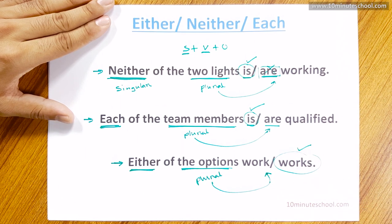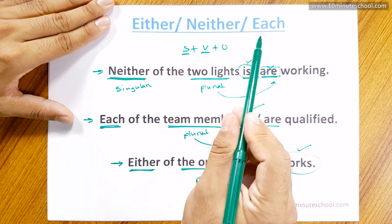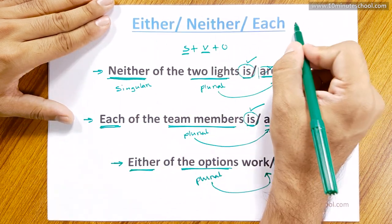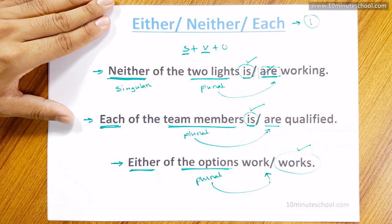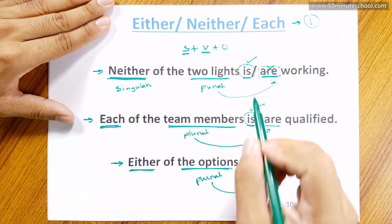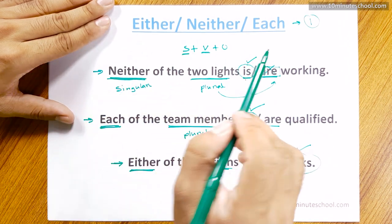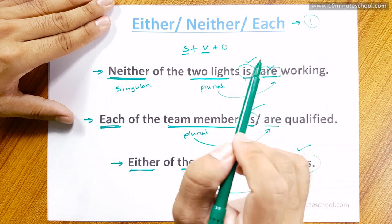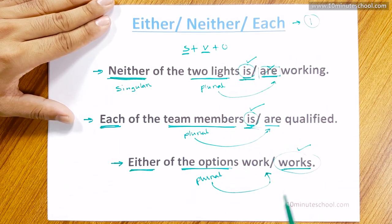So, once you have a sentence with either, neither, or each, the subject is singular. So the verb is singular. In subject-verb agreement, when you use either, neither, or each, the verb must always be singular.